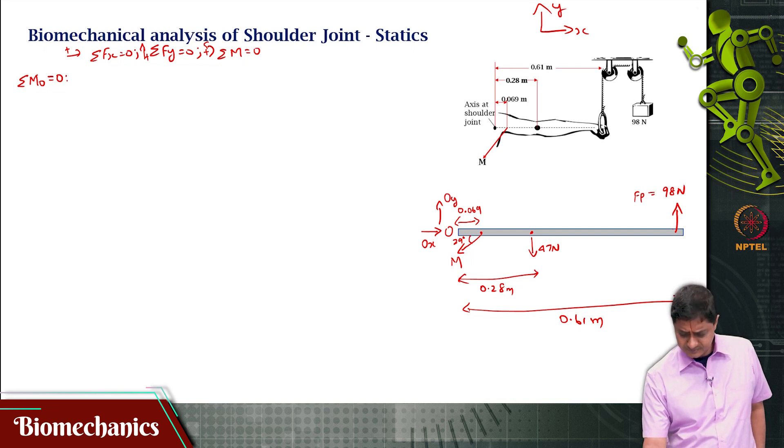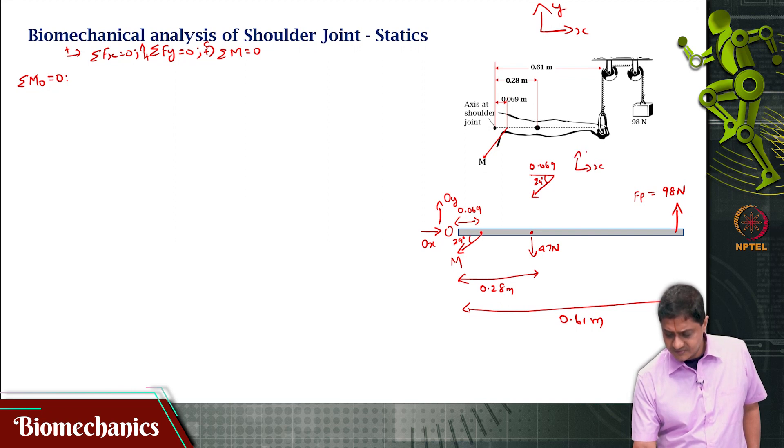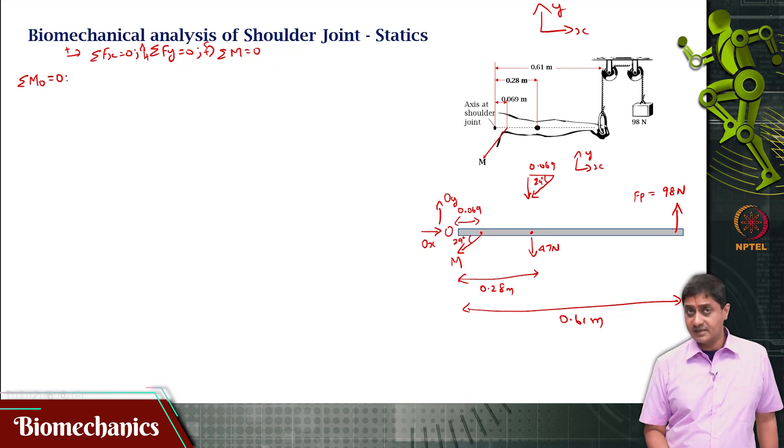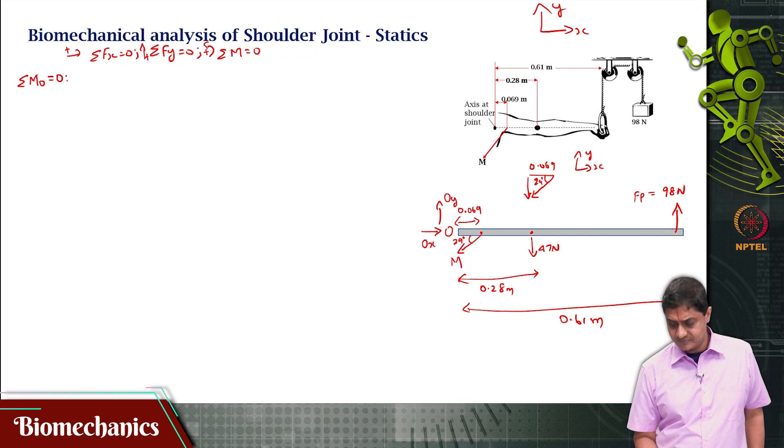So, the distance is 0.069, this angle is 29 degrees. So, for that xy axis, this will have a negative y component and a negative x component.